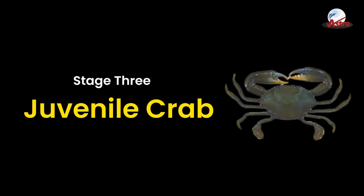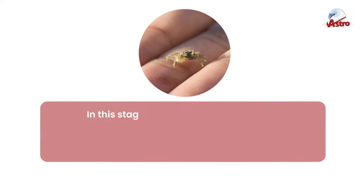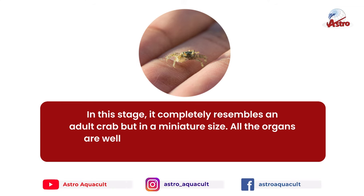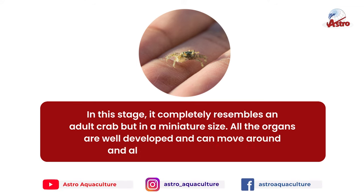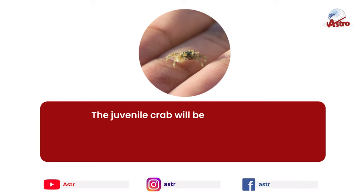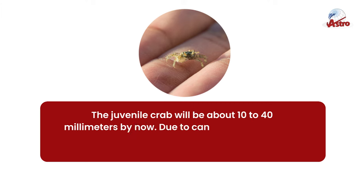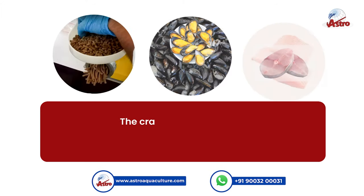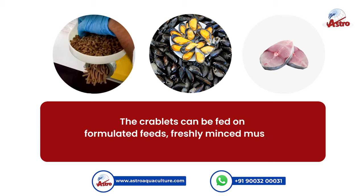Stage 3: Juvenile Crab. In this stage, it completely resembles an adult crab but in a miniature size. All the organs are well developed and it can move around and also swim in the water. The juvenile crab will be about 10 to 40mm by now. Due to cannibalistic behavior, a density of 50 to 60 per square meter must be maintained. The crablets can be fed on formulated feeds, freshly minced mussel, or fish meat.